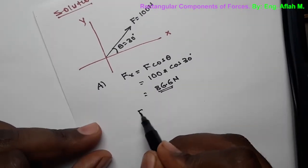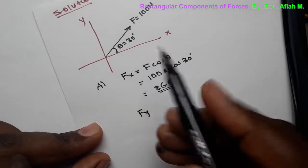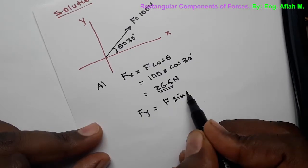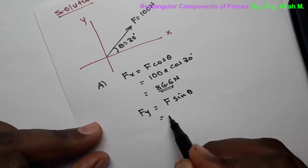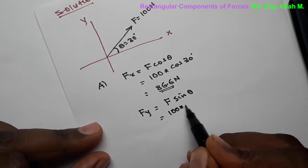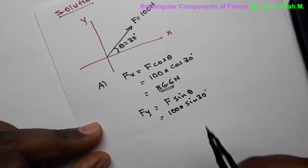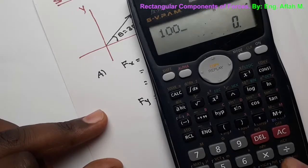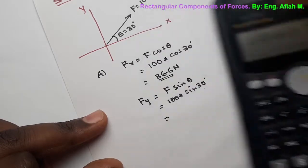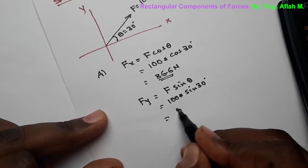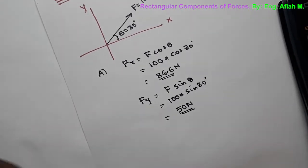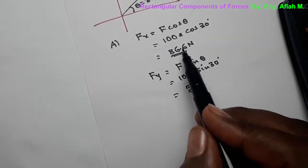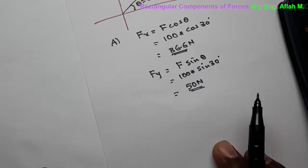Similarly, since theta is measured with the X-axis, the Y component of the force F is FY equals F times sine of theta. Substituting the values: 100 times sine of 30 degrees equals 50 Newtons. So the X component of F equals 86.6 Newtons and the Y component of F equals 50 Newtons.